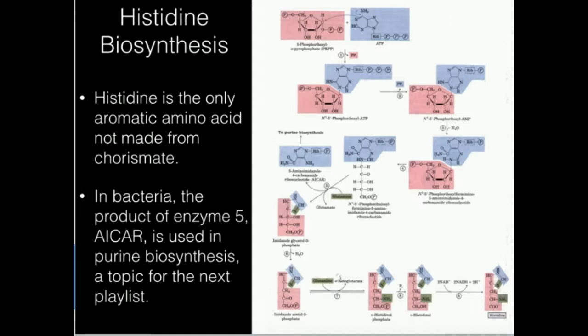However, histidine is the only one of the four aromatics, the other ones being tyrosine, tryptophan, and phenylalanine. It's the only one that's not made from the precursor chorismate. In fact, histidine is actually made from ATP. In fact, all of its synthesis is actually more closely related to nucleotide metabolism.